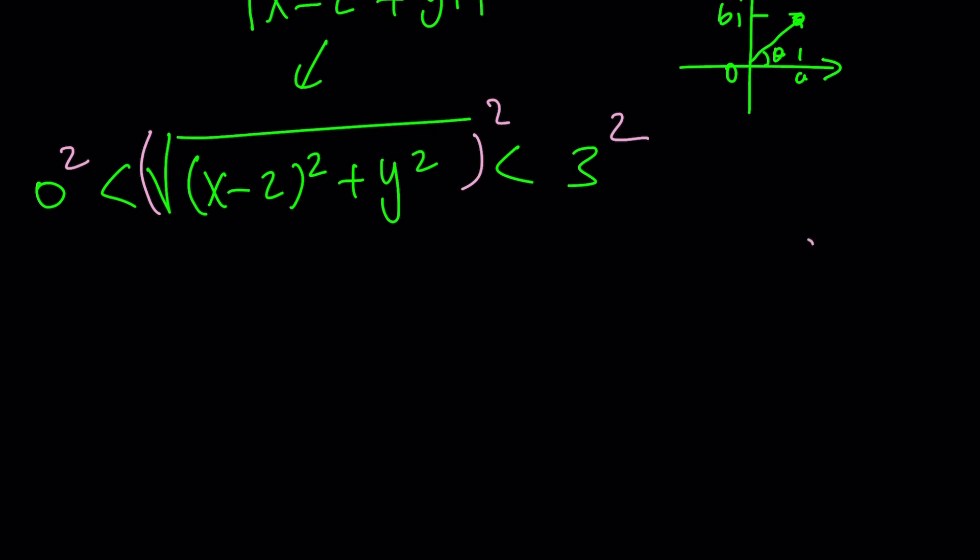Otherwise, think about something like something between negative 5 and negative 3. When you square everything, you're going to get a false inequality. Make sense? So we need to make sure that when we're doing squaring both sides, it is done correctly. And in this case, it's okay to do.